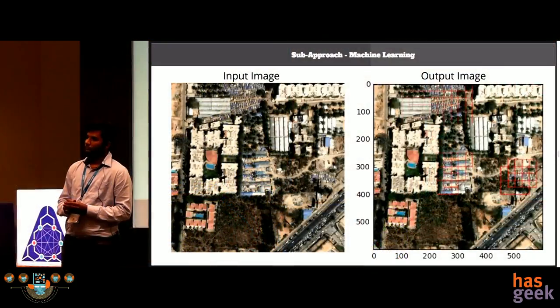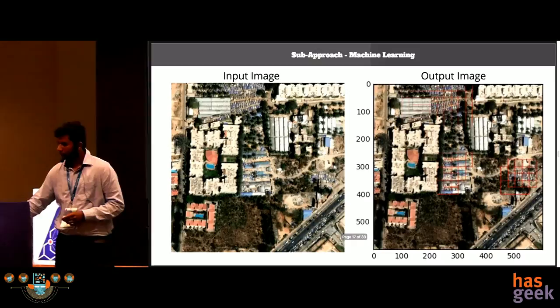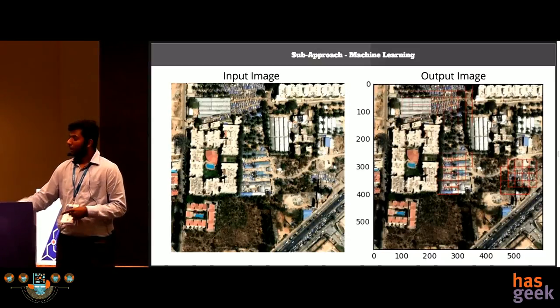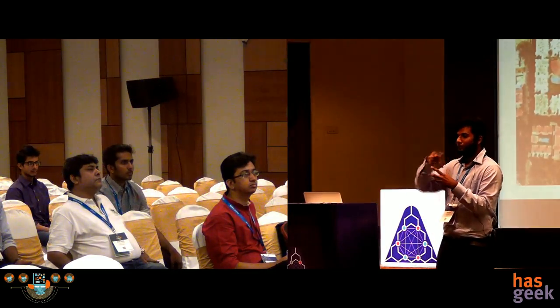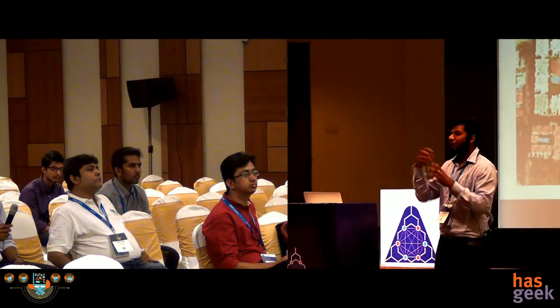A follow-up question asked about the random forest output slide, where segments were marked showing where the model predicted UMCs. The questioner asked how labeling was done and how the model's correctness was verified, particularly for the CNN approach. The answer: We extracted patches out of the original image using masks to label patches as UMC or non-UMC, then stitched the output patches together to represent the final output image.